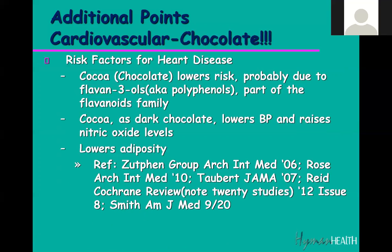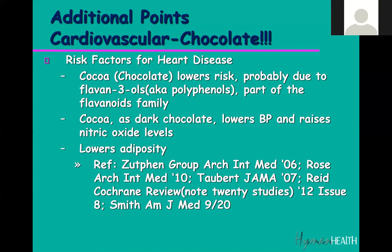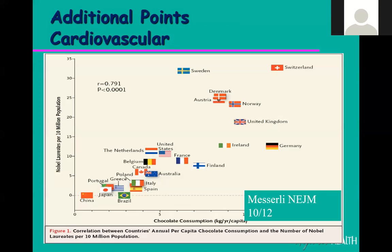One important protective factor: chocolate. Chocolate lowers your risk of high blood pressure and heart disease, probably through polyphenols. Dark cocoa and wine lower blood pressure and raise nitric oxide levels. Chocolate also appears to lower obesity by reducing cravings. There's even a study plotting the number of Nobel prizes per country against chocolate consumption — the more chocolate consumed, the more Nobel prizes awarded. A truly important finding.